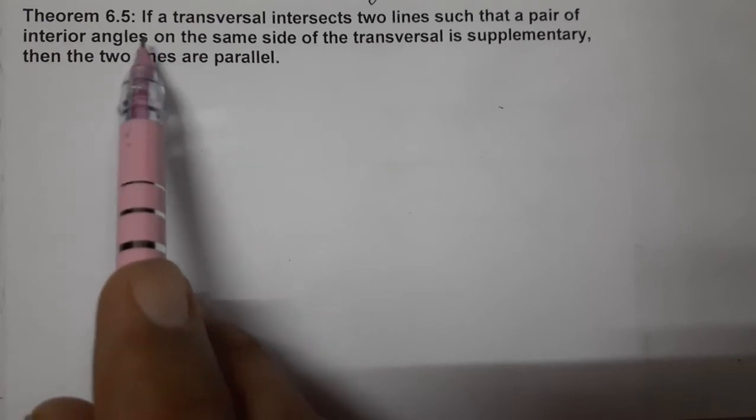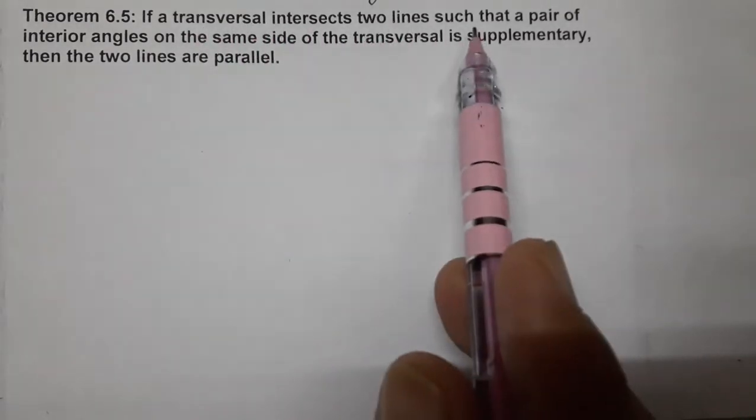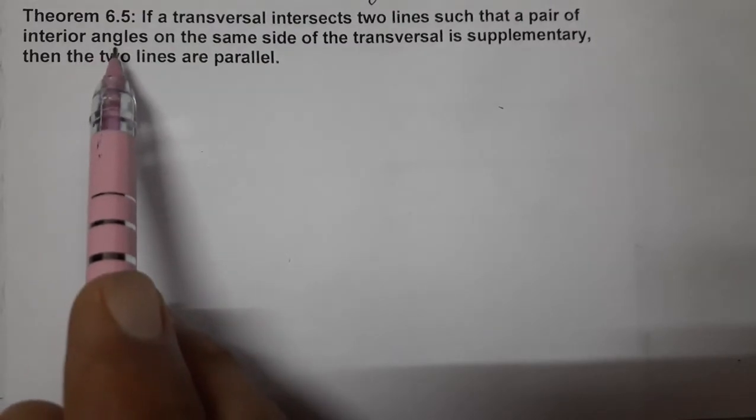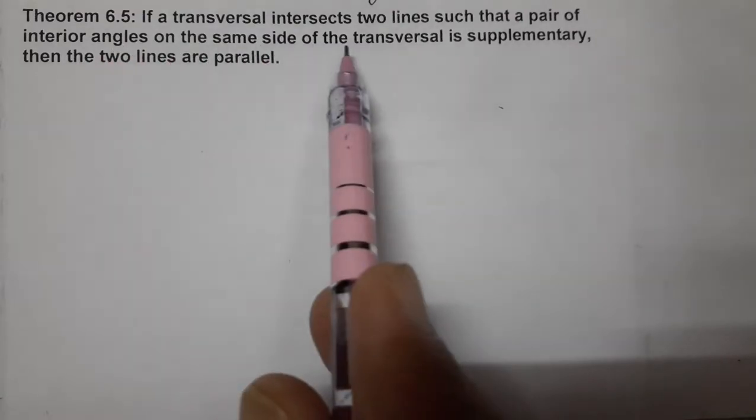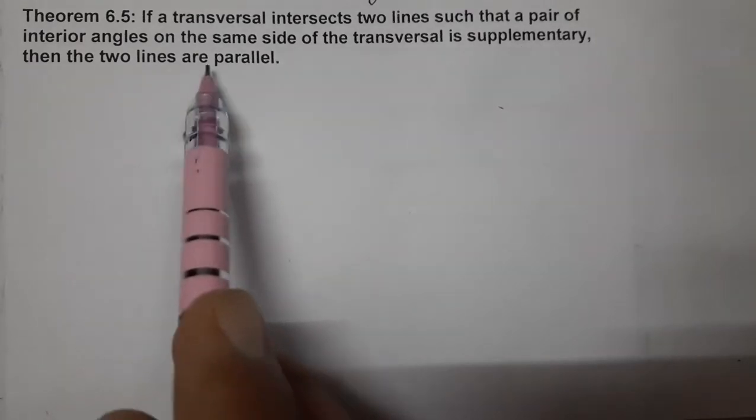Now let's start. What is the theorem? The theorem is: if a transversal intersects two lines such that a pair of interior angles on the same side of the transversal is supplementary, then the two lines are parallel.